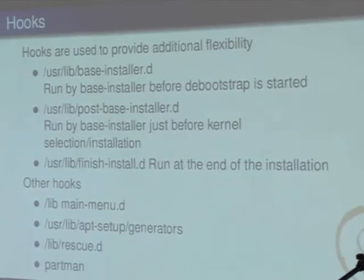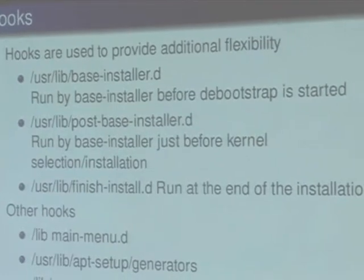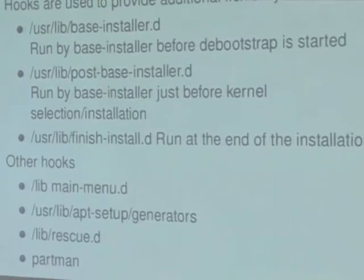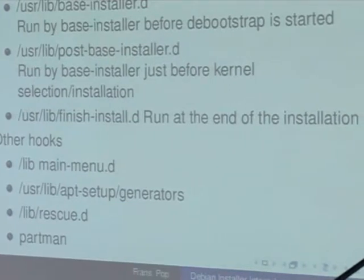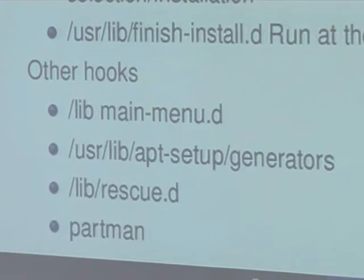The most used hook places are just before the bootstrap is run, after the base system has been installed but before the kernel is selected — so you could even say you want to select a different kernel there — and at the very end of the installation, when things are cleaned up and the last configuration bits are written to the target system. There are some other hooks that are not used so much and are really specialized. You can drop things in lib/main-menu.d — those will be picked up by the main menu program.